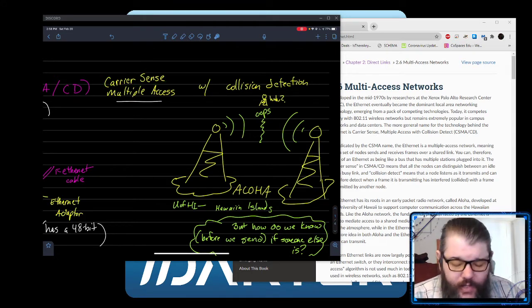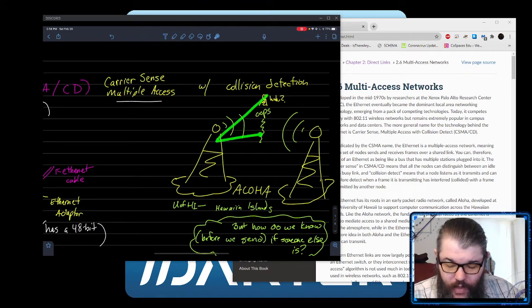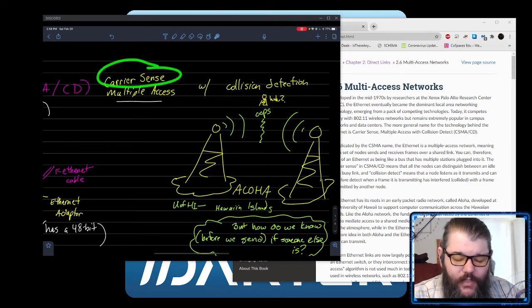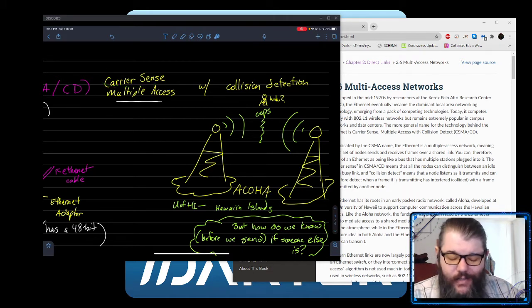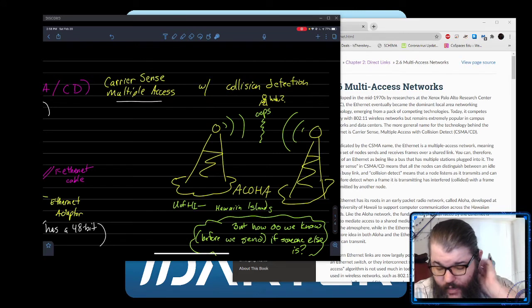Multiple access means that lots of folks can be communicating over this line at once. You might have three towers and all three of them may want to communicate. They need to sense when the line is busy, transmit when it's not, and deal with that situation. In order to deal with that, they have to be able to tell if they're colliding.